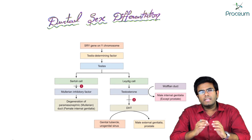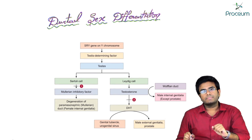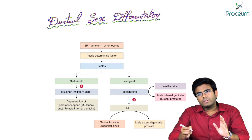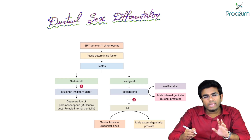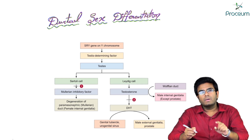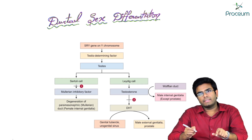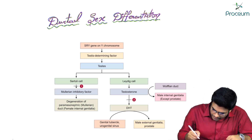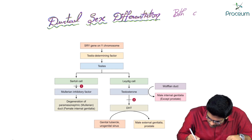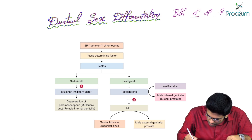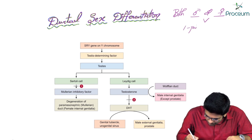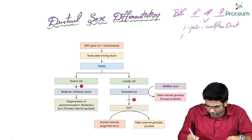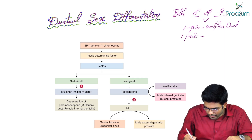In this lecture, let's mainly discuss about the ductal sex differentiation. During the sixth week of gestation, both male and female embryos will have a pair of Mullerian duct as well as Wolffian duct.